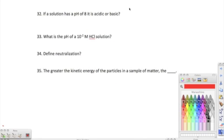Moving on to 32, it says if a solution has a pH of 8, it is acidic or basic, and we know that since it has 8, anything above 7 is going to be basic. 33, what is the pH of 10 to the negative 2nd molarity solution? To figure out its pH, all we do is we take the number that is right here, bring that down, and we know that that is going to be the pH. So there's a pH of 2. Don't worry about it being negative, just bring the number down, take the absolute value of it. pH of 2 is definitely going to be acidic.